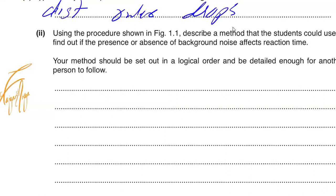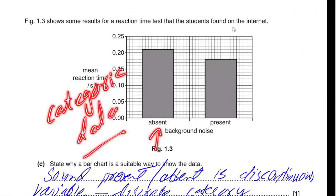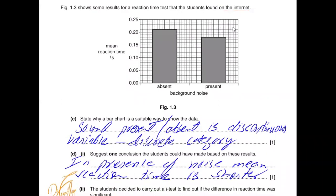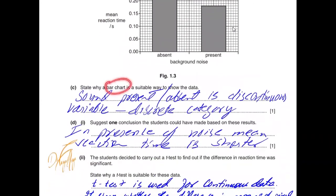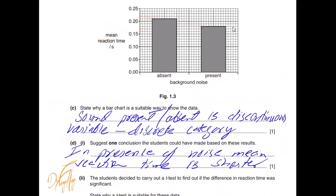Figure 1.2 shows the results of the reaction time the students found on the internet: absence of noise, presence of noise. This is called categoric data because the data is in two categories - one where the noise was absent and one in which the noise was present. The mean reaction time is shown to you and the reaction time was higher in the absence of noise. A bar chart is a suitable way to compare the data because it is categoric data, it is discontinuous data with discontinuous variables in categories. The conclusion you could make from these results is in the presence of noise mean reaction time is shorter.